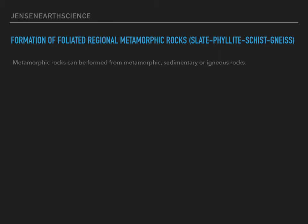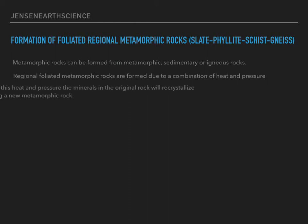Metamorphic rocks can be formed from metamorphic, sedimentary, or igneous rocks. All three types of rocks can become a new metamorphic rock. Regional foliated metamorphic rocks are formed due to a combination of heat and pressure. Due to this heat and pressure, the minerals in the original rock will recrystallize, forming a new metamorphic rock.